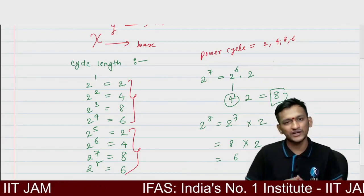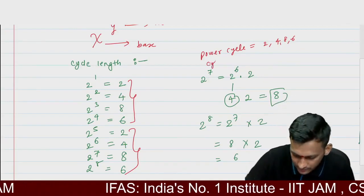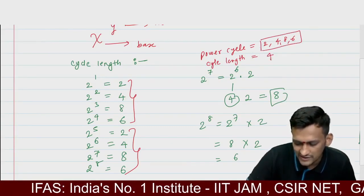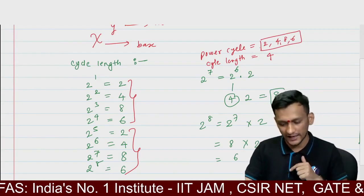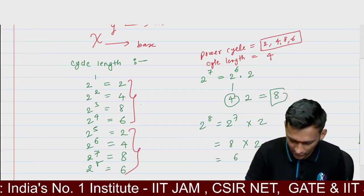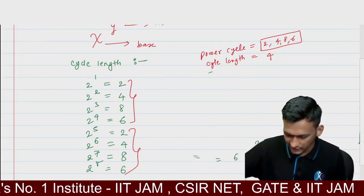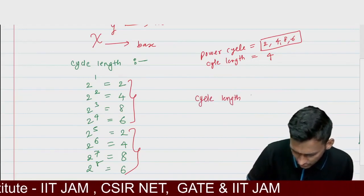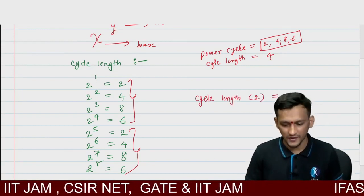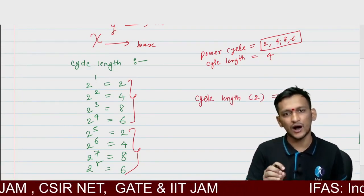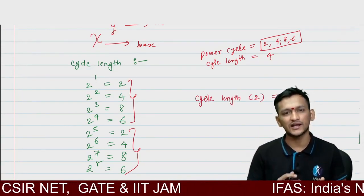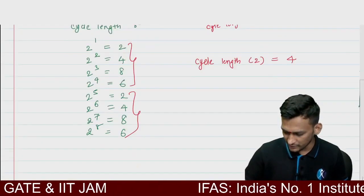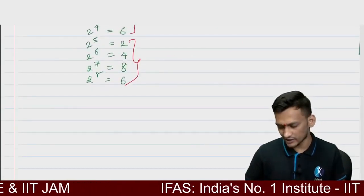The cycle length is how many numbers are there in the power cycle. So cycle length for 2 is 4. If you understand how to find cycle length, you can easily find the unit digit of any given number. Let me give one more example — let's find the cycle length for 3.